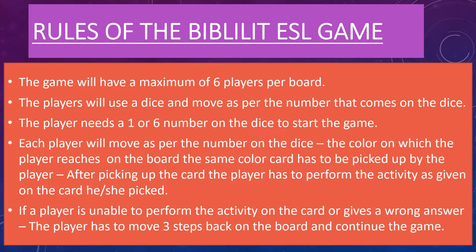The color on which the player lands on the board — a card of that same color has to be picked up. There will be a collection of cards of different colors matching those on the board. The player picks up one card and has to perform the activity as given on the card. If a player is unable to perform the activity or gives a wrong answer, the player has to move the token three steps back on the board and continue the game.